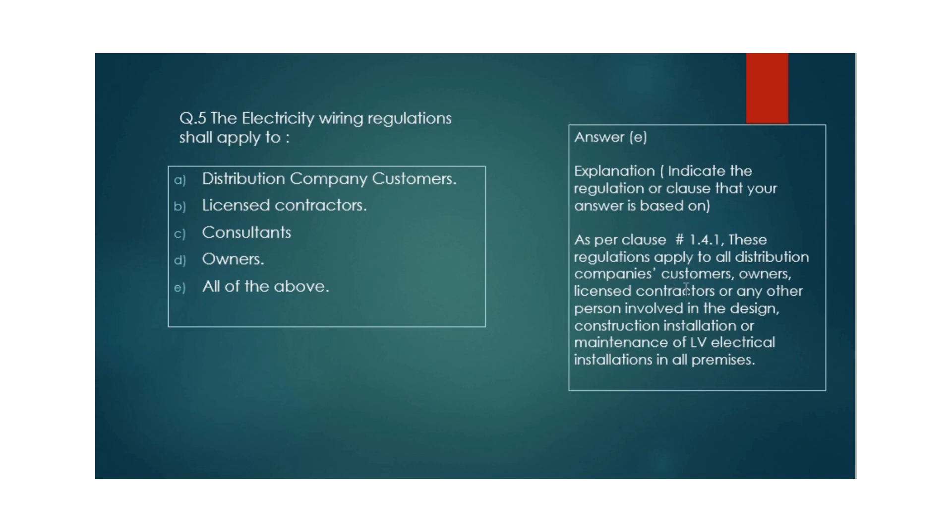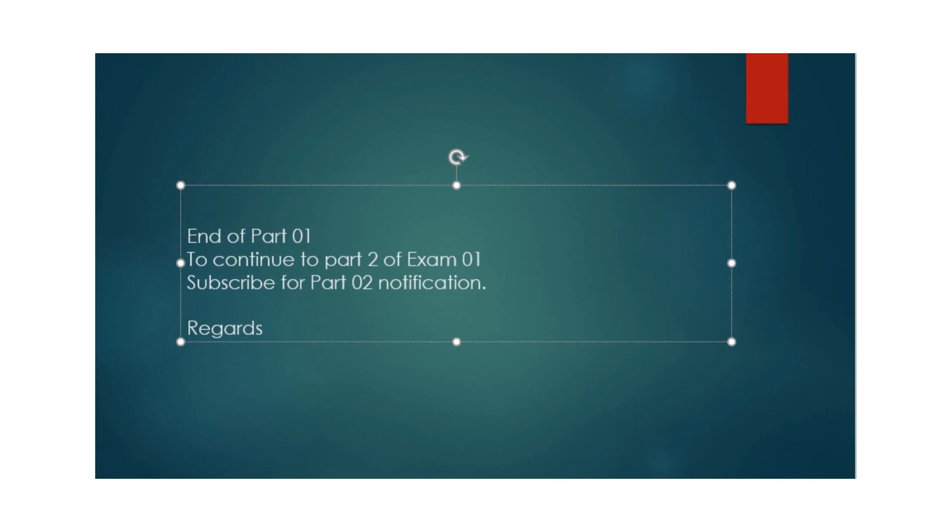As per clause 1.4.1, these regulations apply to all distribution companies, customers, owners, licensed contractors, or any other person involved in the design, construction, installation, or maintenance of LV electrical installations in all premises. Whether you are a consultant, owner, main contractor, or distribution company, you have to work under these regulations. This is the end of Part 1. See you soon in Part 2 of Exam 01.